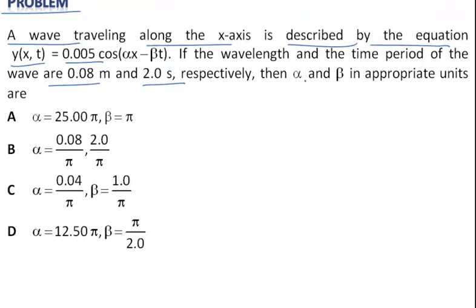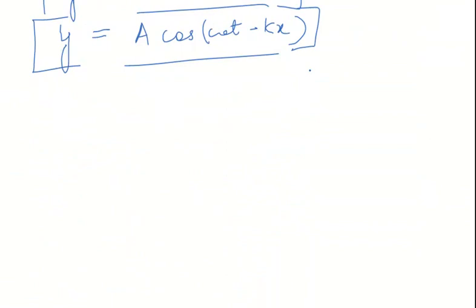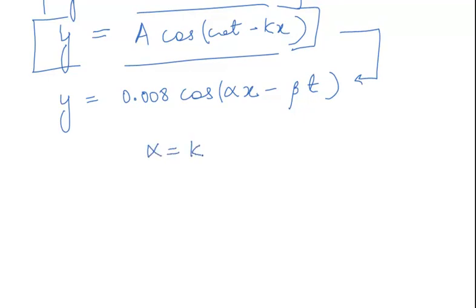If you compare the given equation, y = 0.008 cos(αx - βt), then you will get an idea that α is equal to k, and we know that k is 2π/λ.